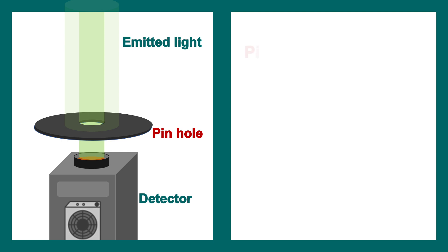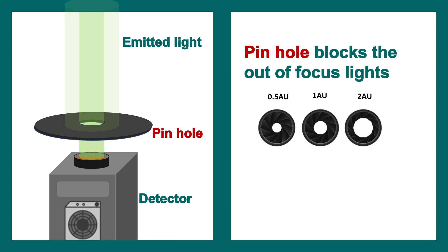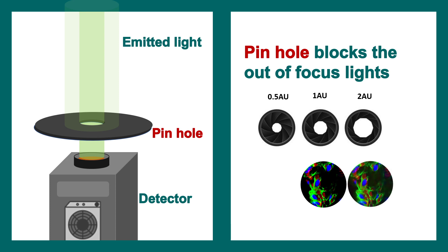We can control the pinhole diameter to affect image quality. At one Airy unit pinhole diameter, the image looks sharp and focused. Opening the pinhole to two Airy units lets in more out-of-focus light, making the image blurry like a standard fluorescence image. Restricting it to 0.5 Airy units improves resolution and sharpness, but we lose dim signals — low-intensity regions become invisible — so we lose a lot of light in exchange for resolution.